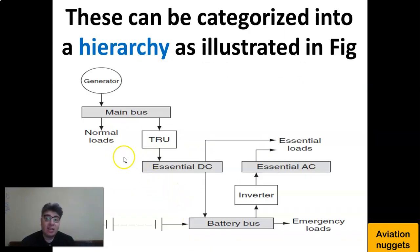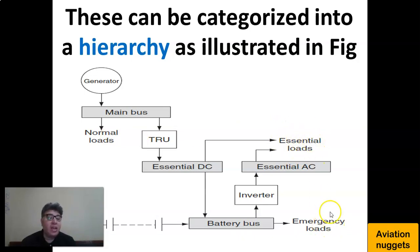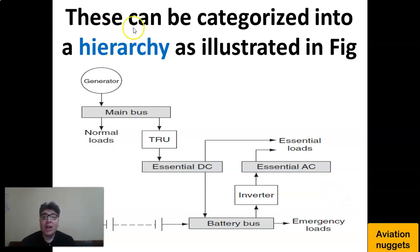We can switch off normal loads for the sake of essential loads, and we can shed essential loads for the sake of emergency loads in case of failures. This is called the hierarchy or categorizing of loads — disconnecting them in accordance with a predetermined sequence.